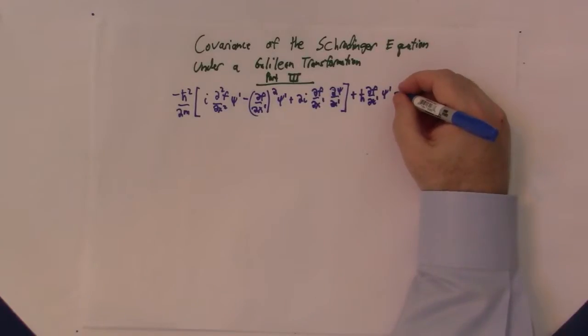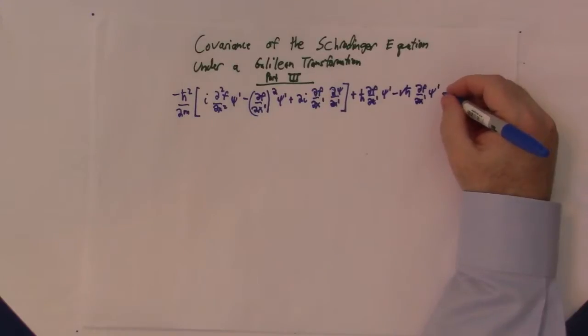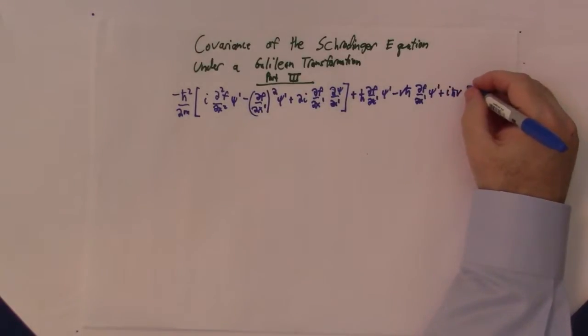Since we're in the prime reference frame, we have psi prime and we have the partial derivative of psi prime with respect to x prime. So we can independently set these equal to zero to solve this equation.